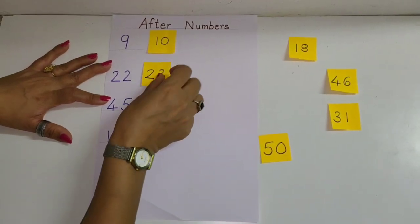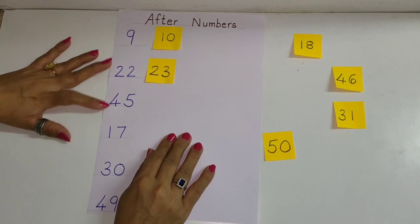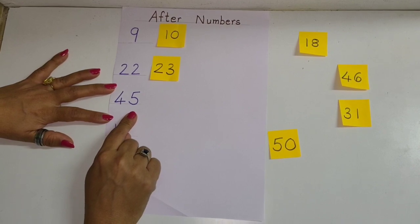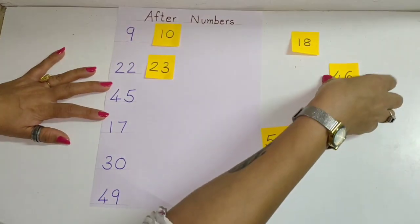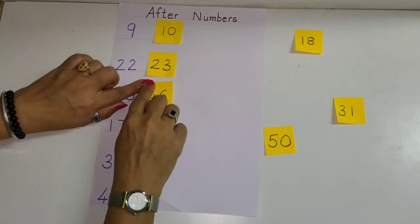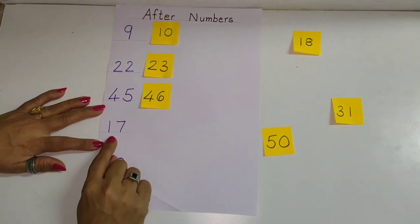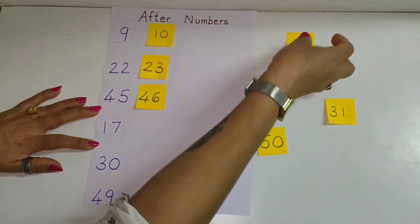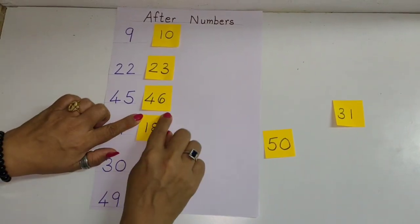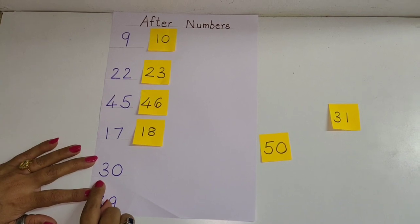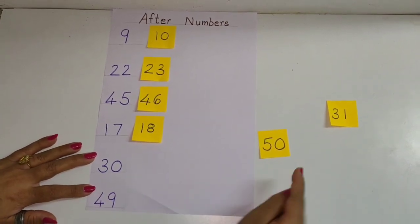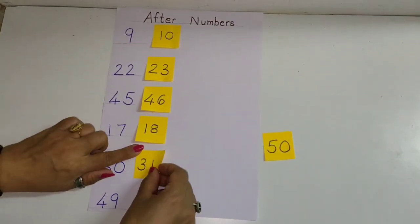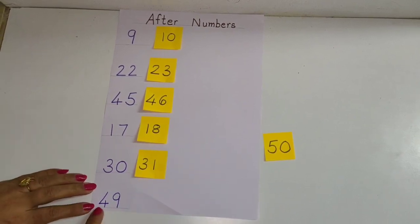Next number is 45. What will come after 45 children? Yes, 46. Next number is 17. So which chit will be picked? After 17, very good, 18. Next number is 30. So which chit will be picked from these two? What comes after 30? Yes, 31. So we put 31 here.